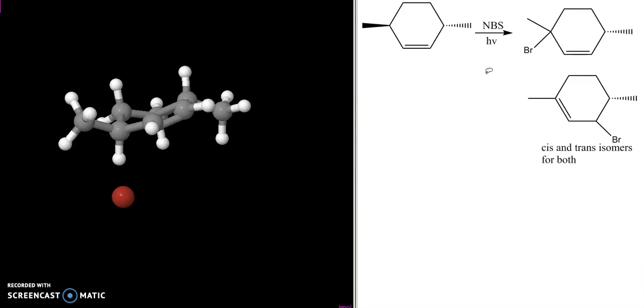Let's look at the allylic bromination of a compound like the one shown here. It's a dimethyl substituted cyclohexene.